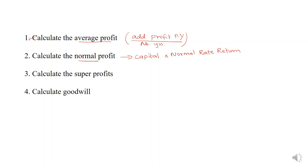Capital into normal rate of return will give you normal profit. After calculating normal profit, you have to calculate super profit. Super profit is the average profit that you calculated in the first step minus the normal profit that you calculated in the second step.